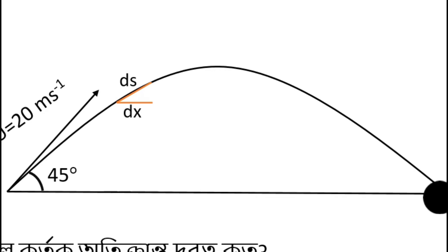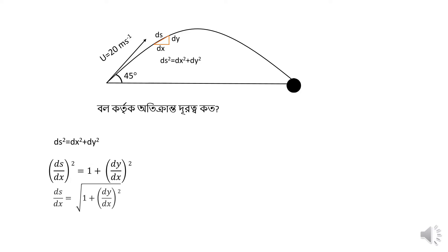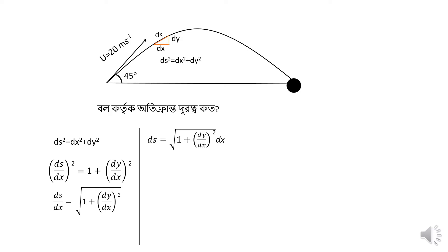So we need to add dx plus dy. The formula becomes: dS by dx whole square equals 1 plus dy by dx whole square. Therefore dS equals the square root of 1 plus dy by dx whole square, times dx.